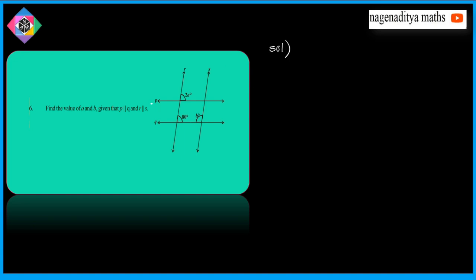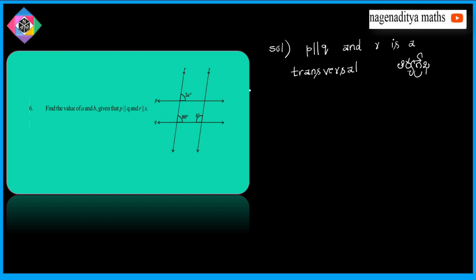P is parallel to Q, and R is a transversal. These two lines are parallel and this is a transversal. Therefore, these two angles are equal because of corresponding angles.